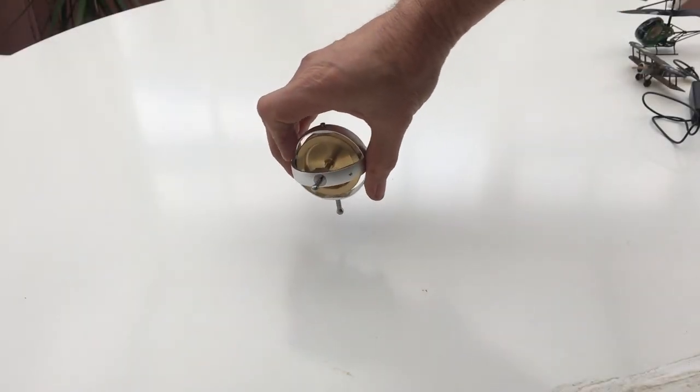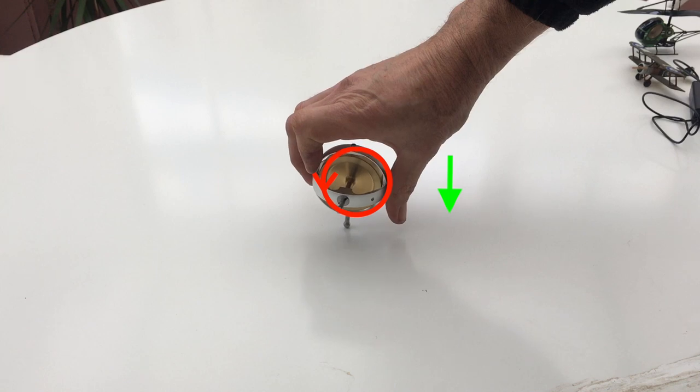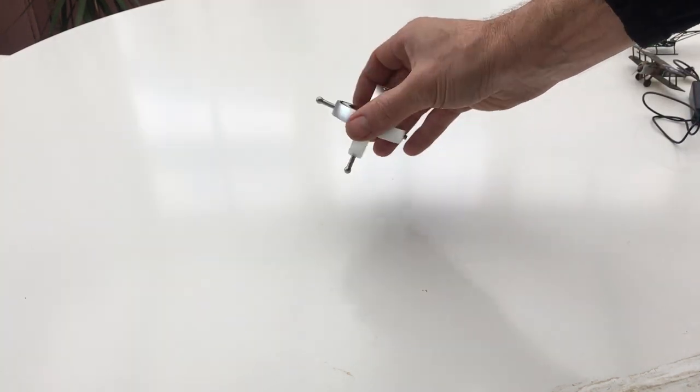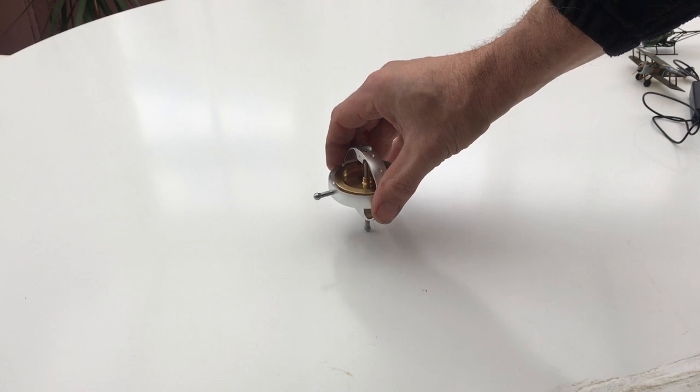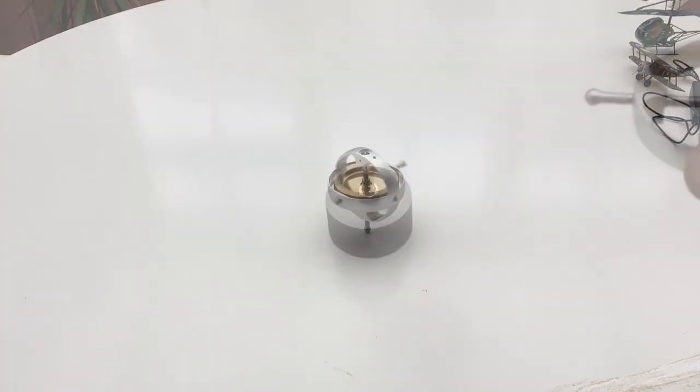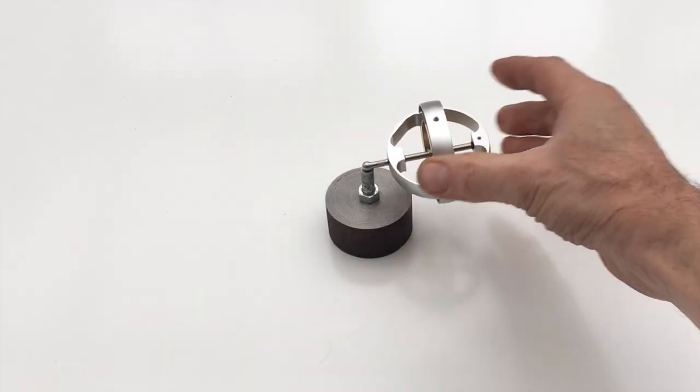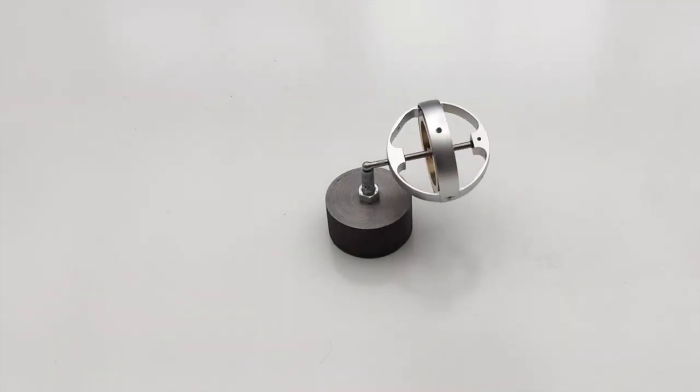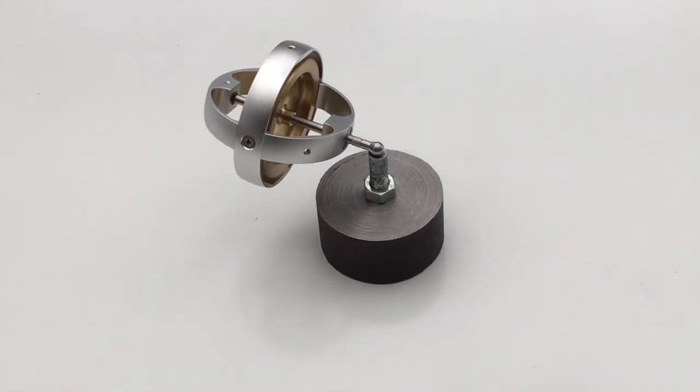If the two forces could align, the outcome would be very different. Now we can see that the flywheel is always turning towards alignment, but can never reach it.